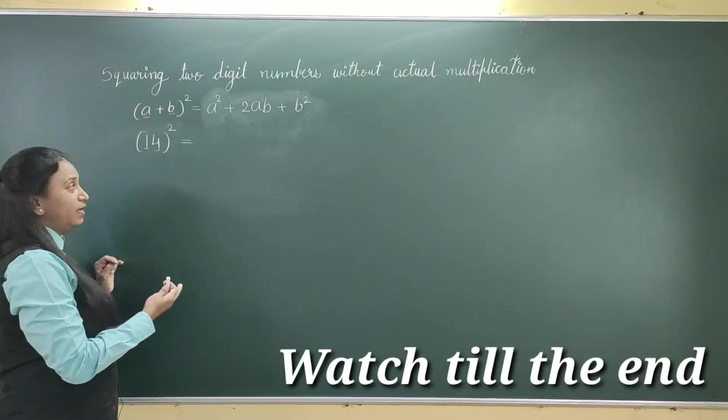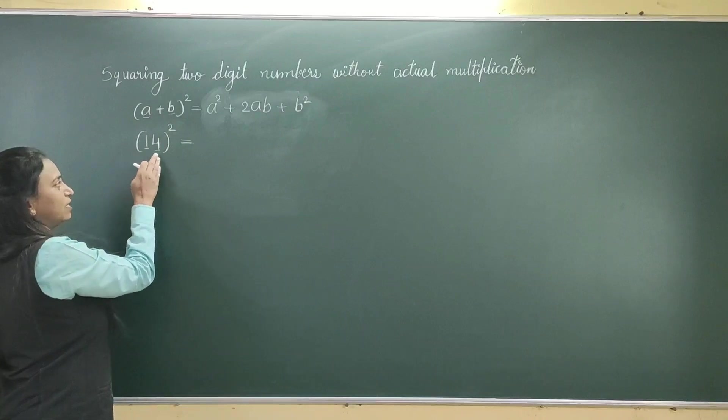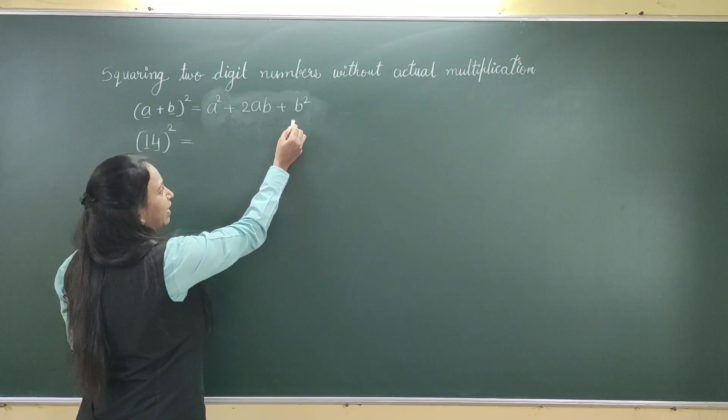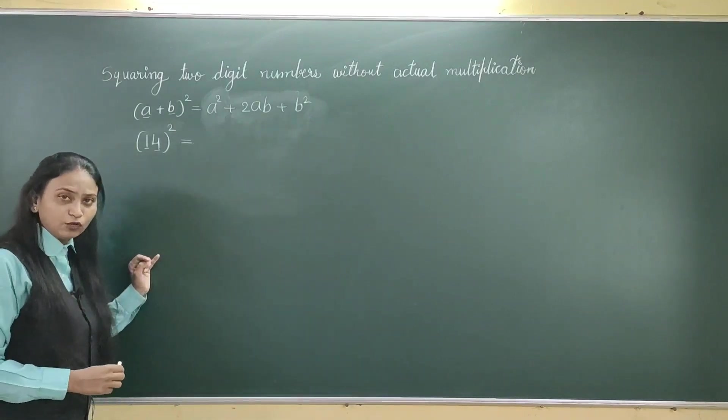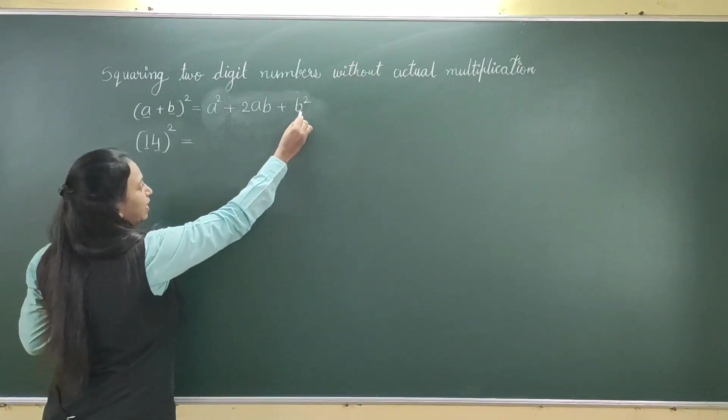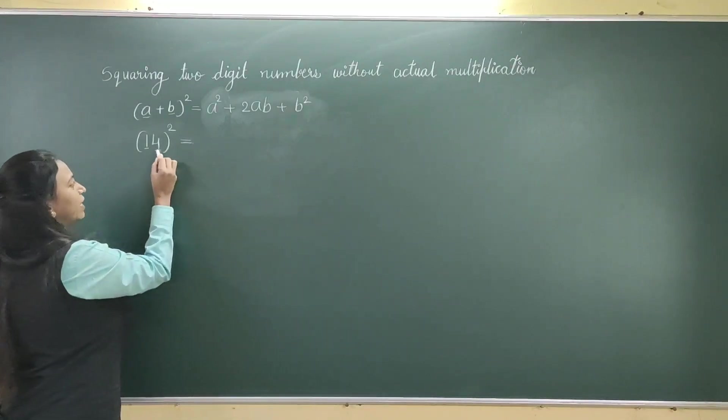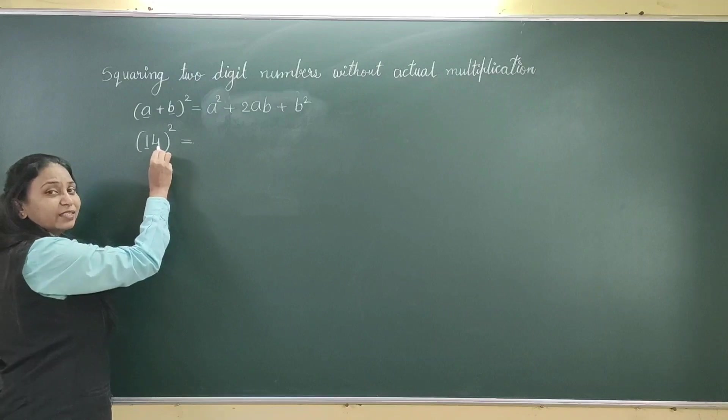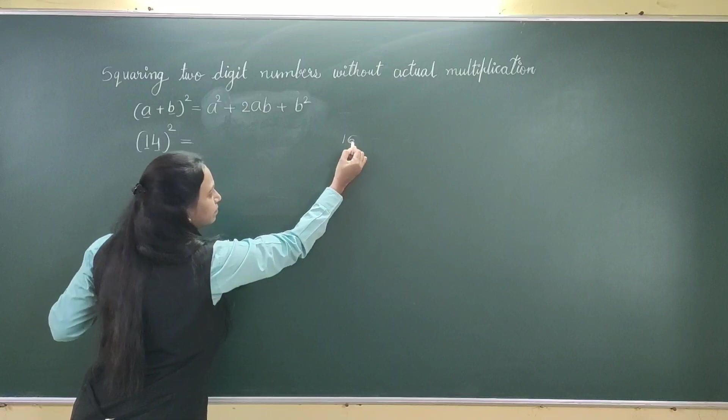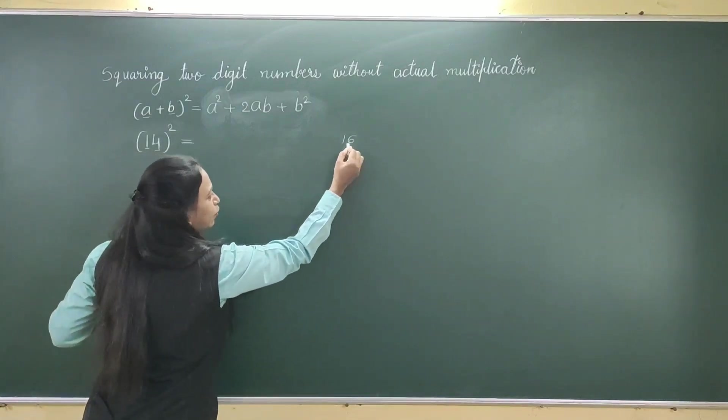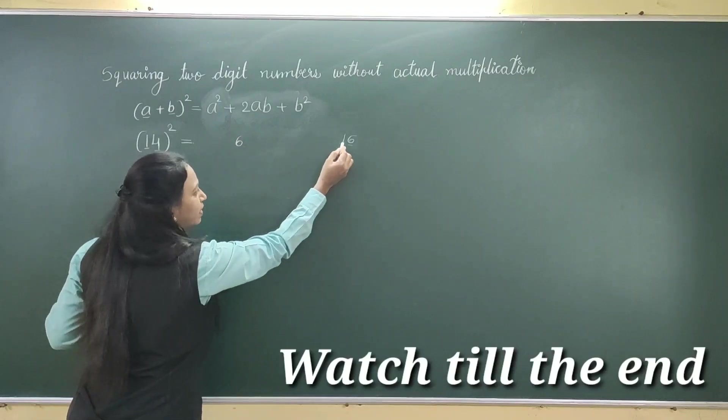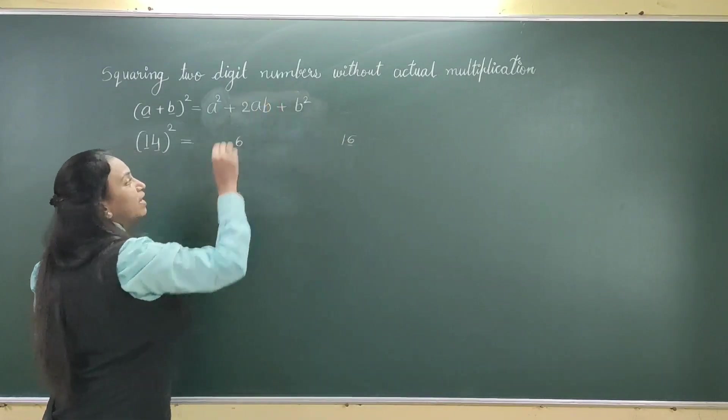Now, we shall apply the same formula to these digits. In mathematical calculations, we always start from right to left. So here also, we will start from the rightmost part, b². Here, the value of b is 4. So, 4² = 16. The unit digit of 4² is 6 and this 1 will carry on to the middle term.